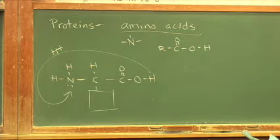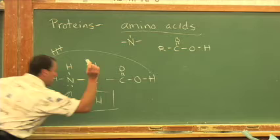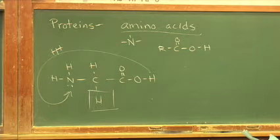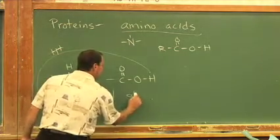The side group, in this case, I've made the simplest possible. Smallest atom, hydrogen. Single bond. This becomes a particular amino acid by the name of glycine.